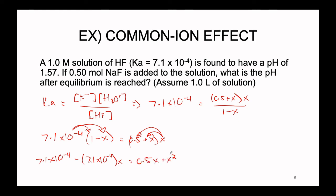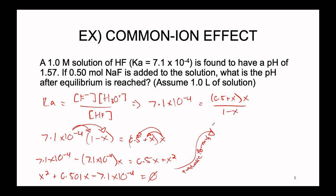Rearranging everything so all terms are equal to zero gives us: x squared plus 0.501x minus 7.1 times 10 to the negative 4, all equal to zero. Plugging the necessary terms into the quadratic formula, we find x — which according to our ICE table equals our concentration of H3O+ — is equal to 0.00141 molar. From here we can calculate pH: pH equals the negative log of 0.00141 molar, which equals a pH of 2.85.